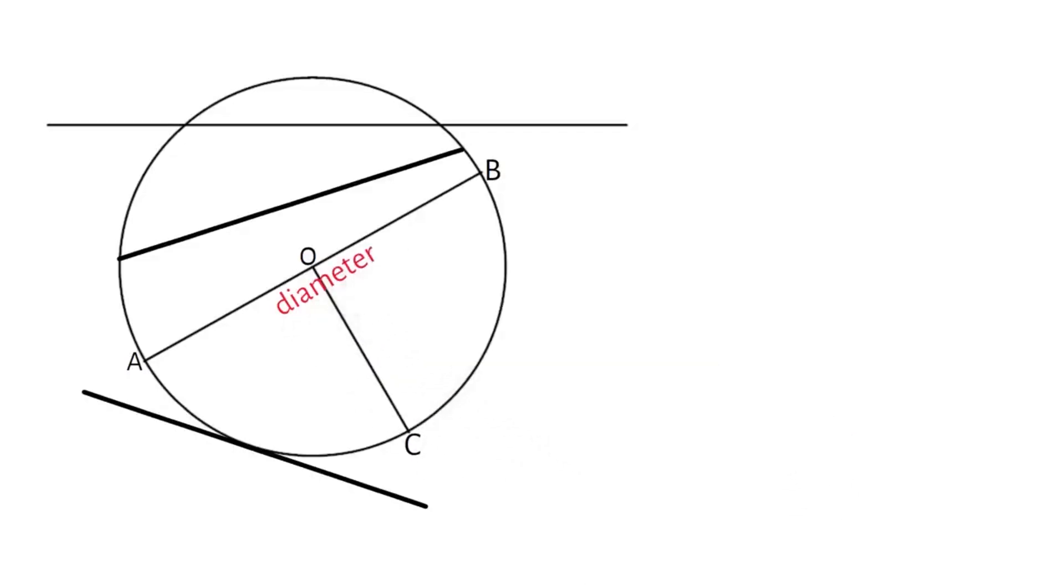Now if they draw a line from the center to the circumference, like the line OC here, we call that line the radius.